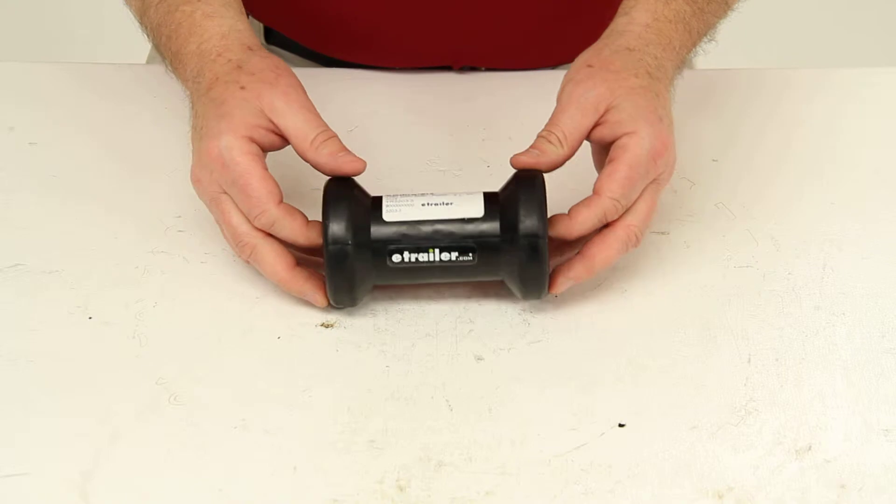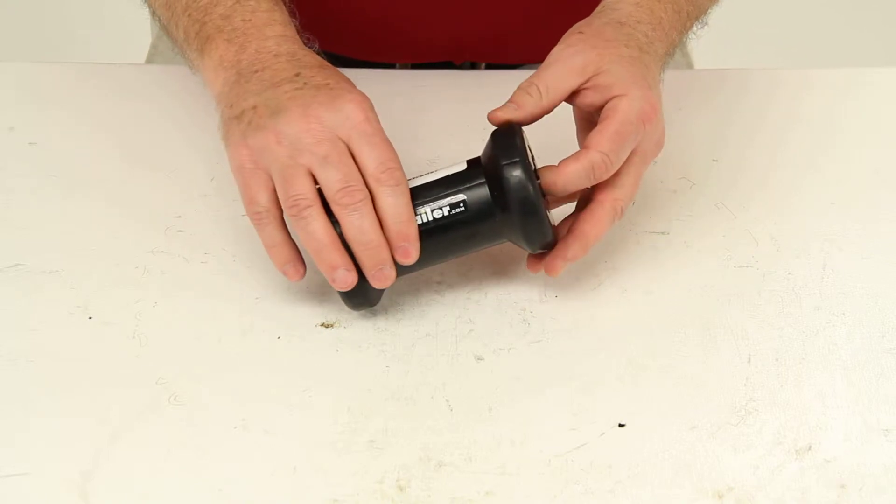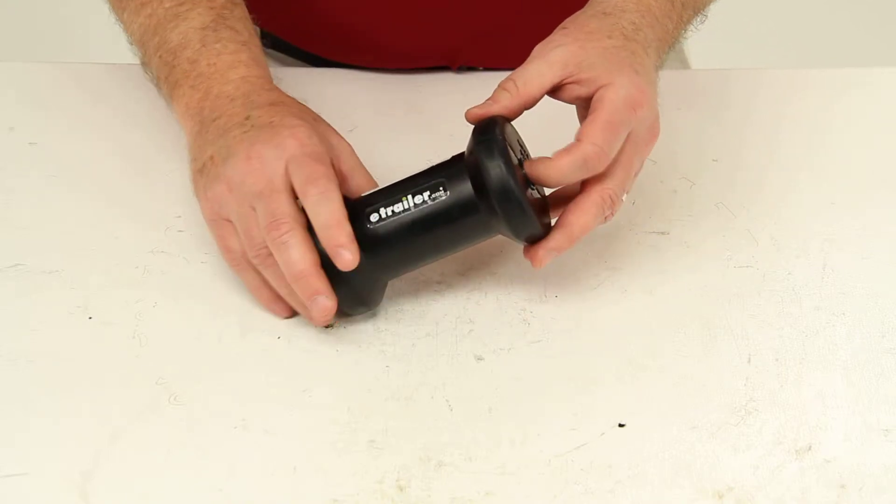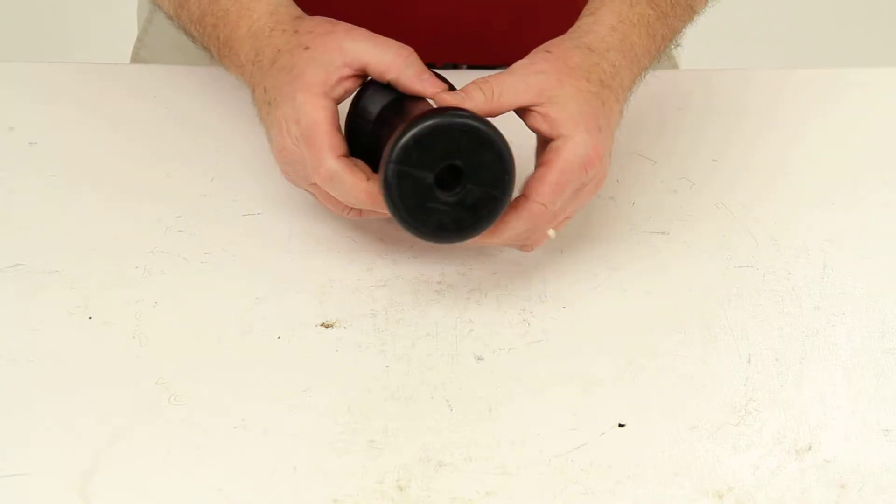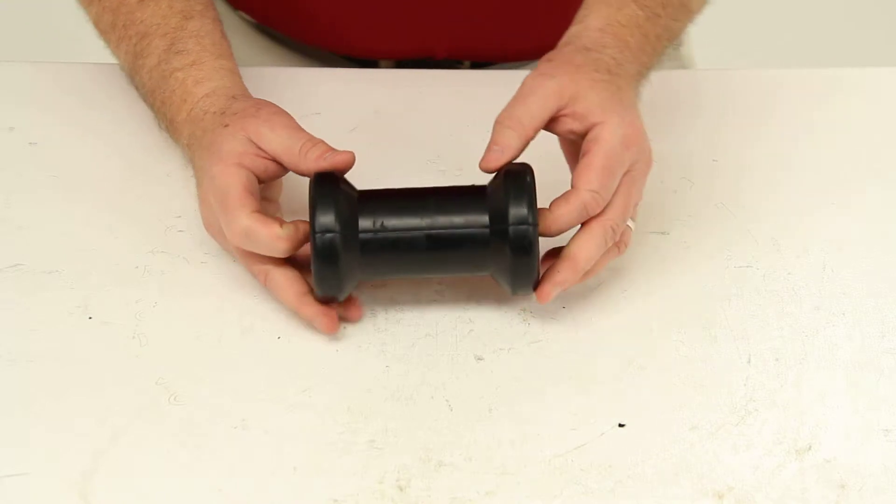This roller is constructed of a heavy-duty rubber material. This product is made in the USA. This will replace your worn-out spool roller on your boat trailer.